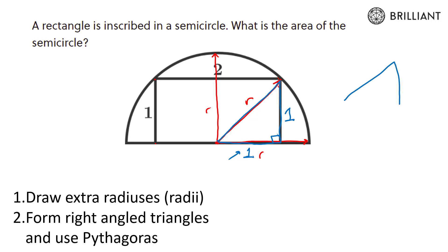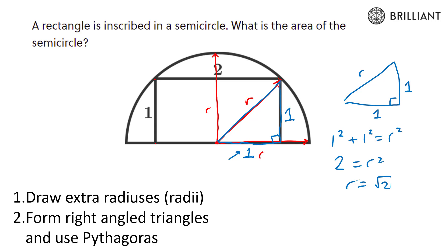We have this right angle triangle formed from this rectangle and our radius. It's a pretty famous right angle triangle, but let's use Pythagoras's theorem: 1 squared plus 1 squared gives us the radius squared. So we have that 2 equals the radius squared, meaning the radius equals the square root of 2. Now we can find the area of the semicircle pretty nicely.